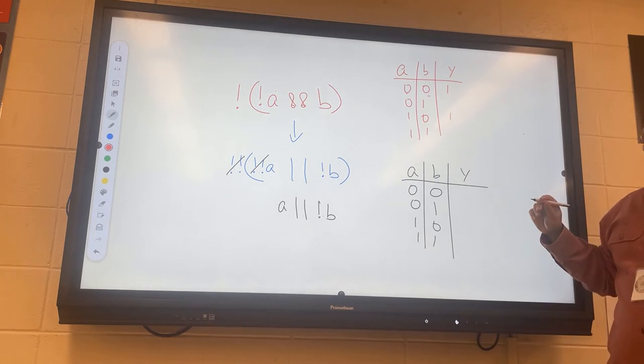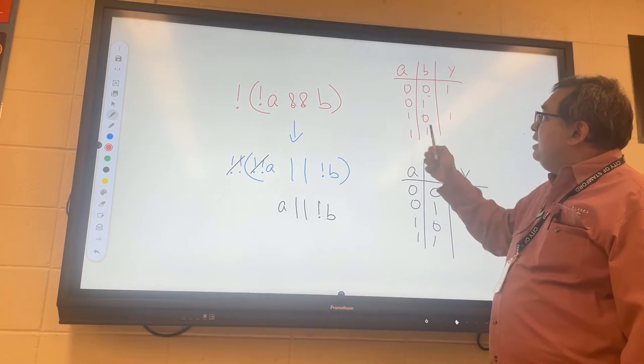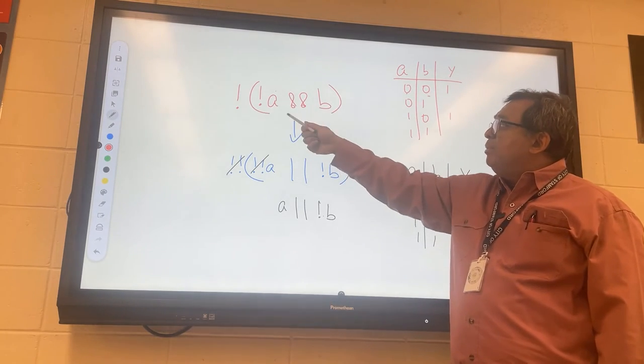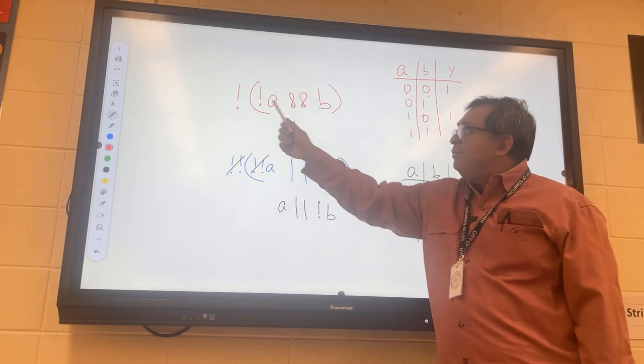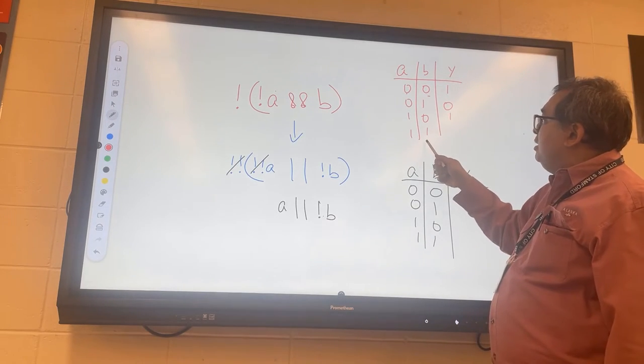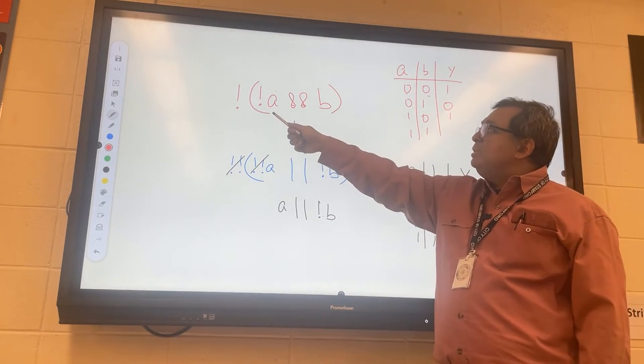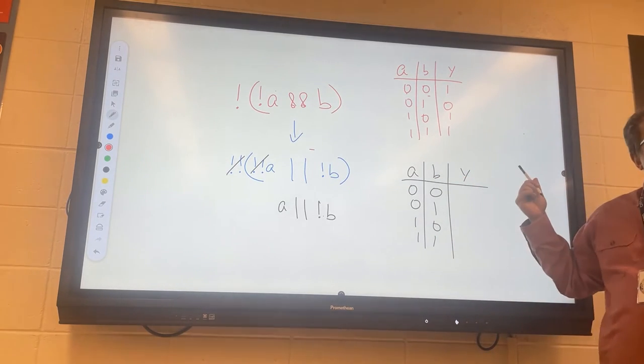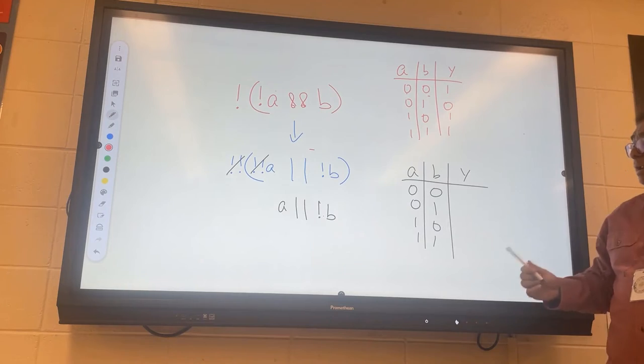Likewise, if A is zero and B is one, this entire part is going to be a one, and then the inverter is going to turn it into a false here. If A is one, that's going to be a zero, and then this is going to be a one. I think that's right—is that what everybody else got? Okay.